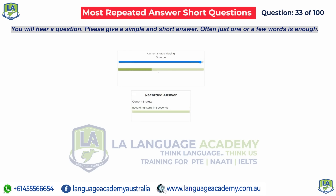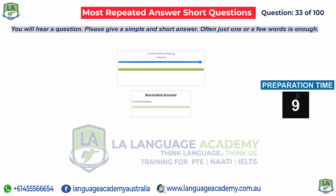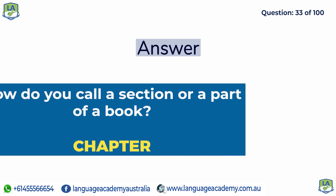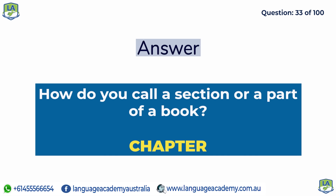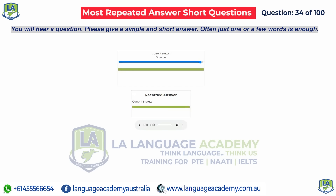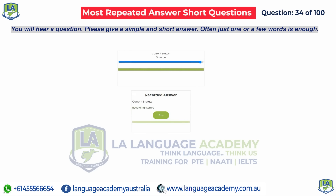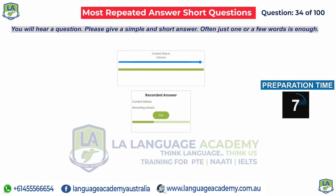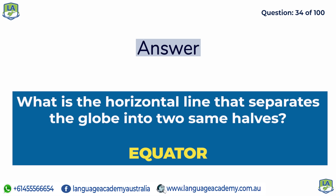How do you call a section or a part of a book? Chapter. What is the horizontal line that separates the globe into two same halves? Equator.